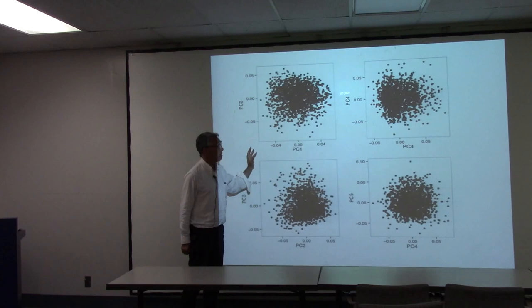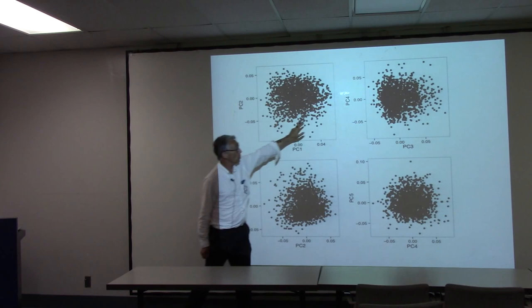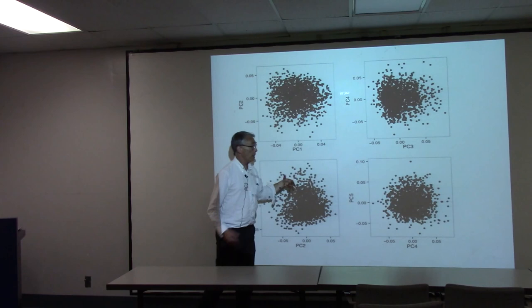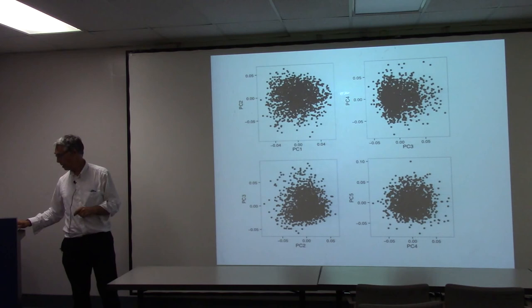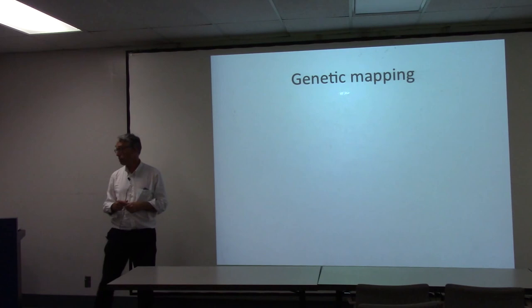Principal components plots PC1 through PC4 and beyond show there is not very much population structure in our outbred population. Our guess that this was a fairly outbred set of unrelated animals looks to be true, and it appears the breeders obeyed our instruction to not give us siblings.